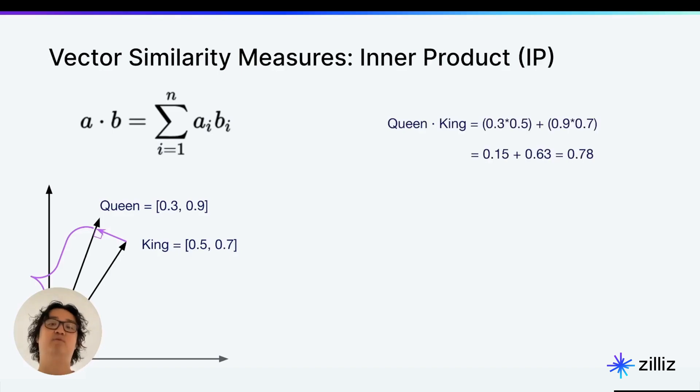So in this example, what that would be is very simple here. It's just queen dot king is this first dimension, 0.3, 0.5, right? The product of that plus the product of the second dimension, 0.9, 0.7. And so the sum of that is 0.15 plus 0.63, which is 0.78.